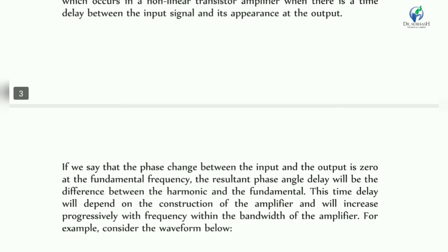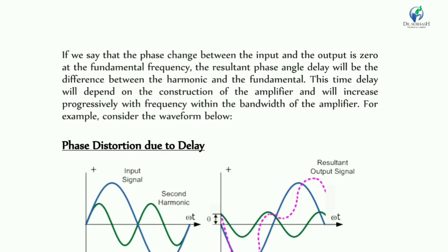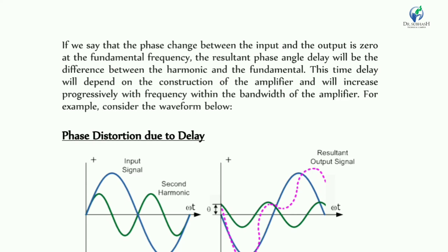If the phase change between input and output differs between the harmonics and the fundamental frequency, the resultant phase angle delay will be the difference between those phase angles. This time delay depends on the construction of the amplifier and increases progressively with frequency within the bandwidth of the amplifier.